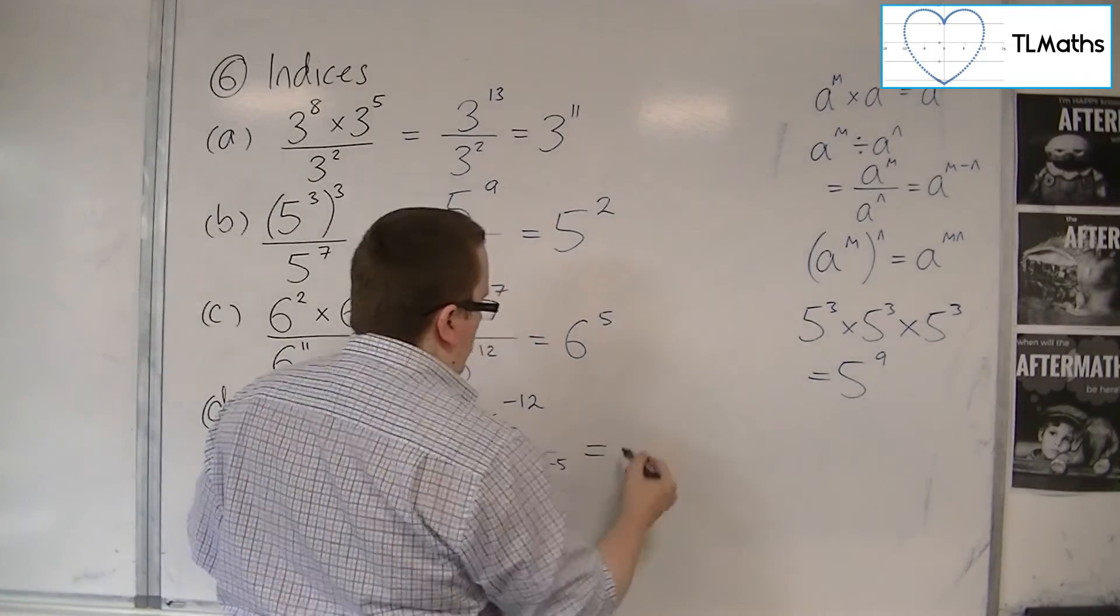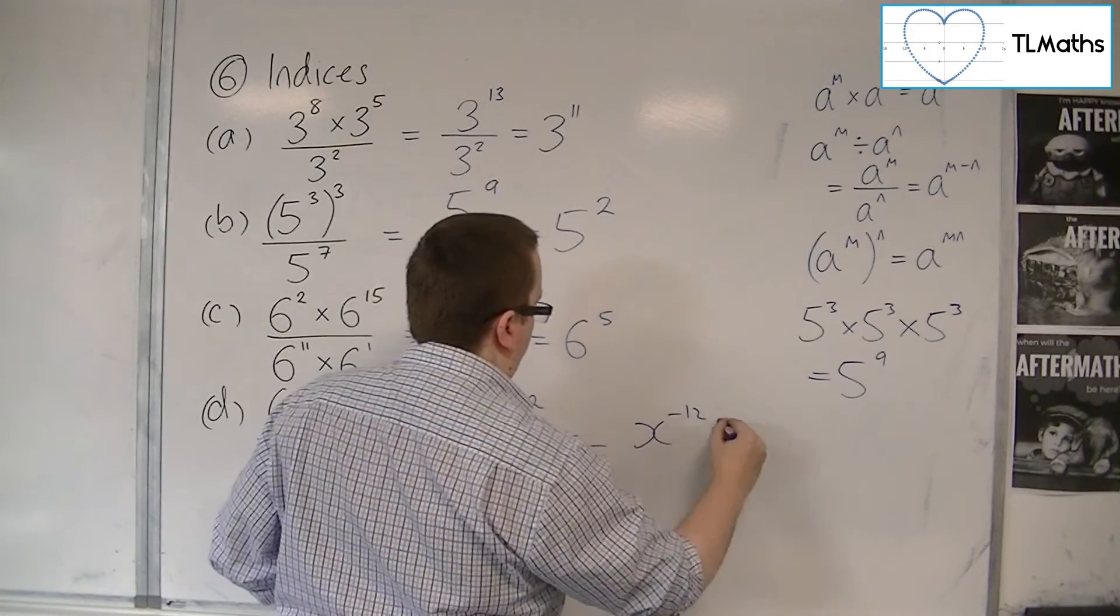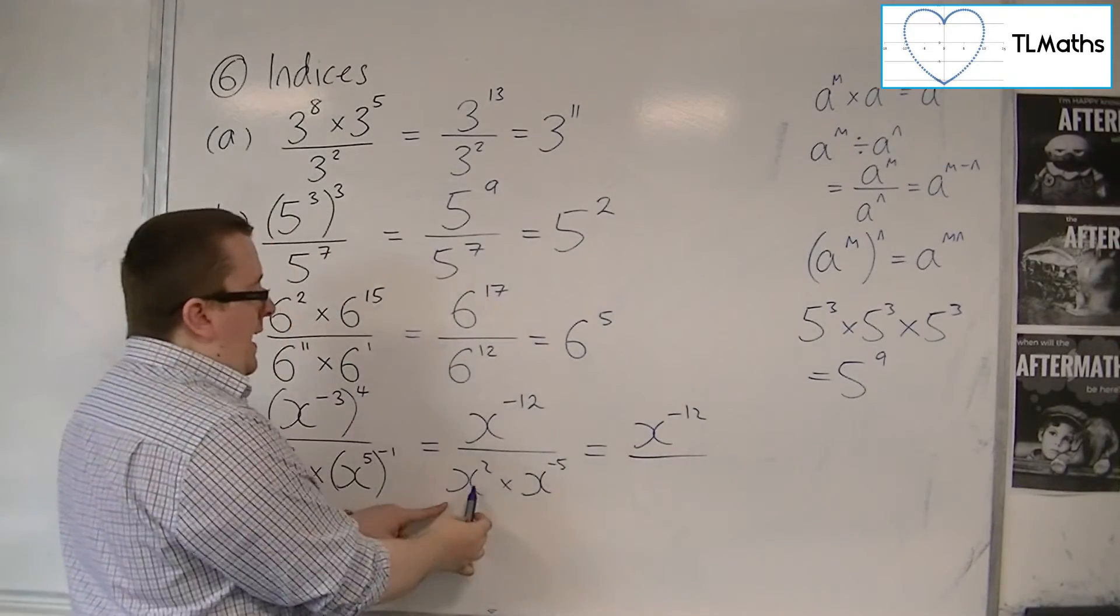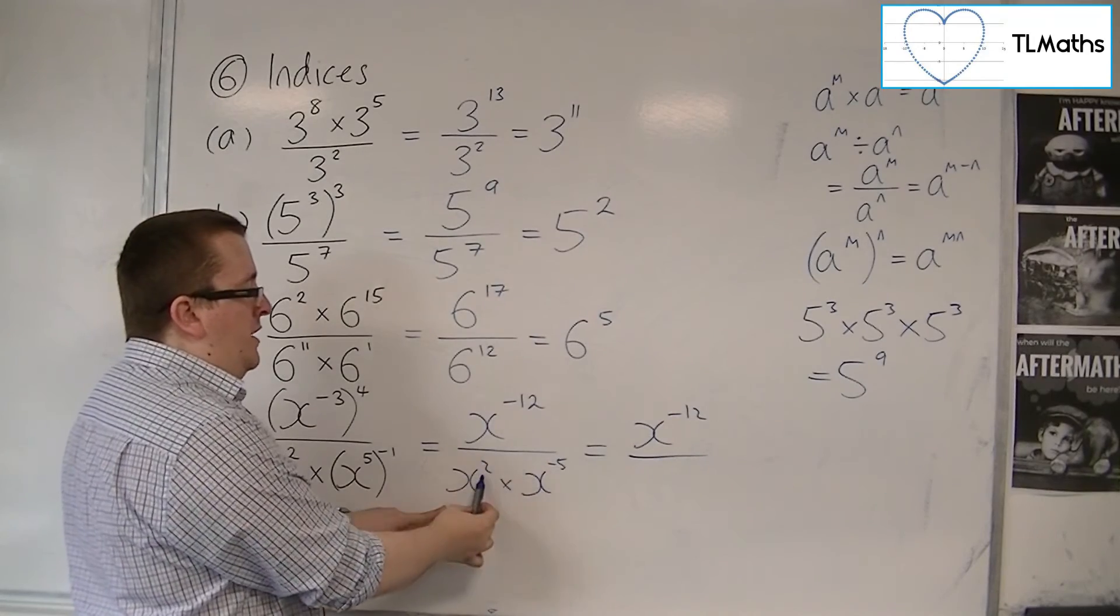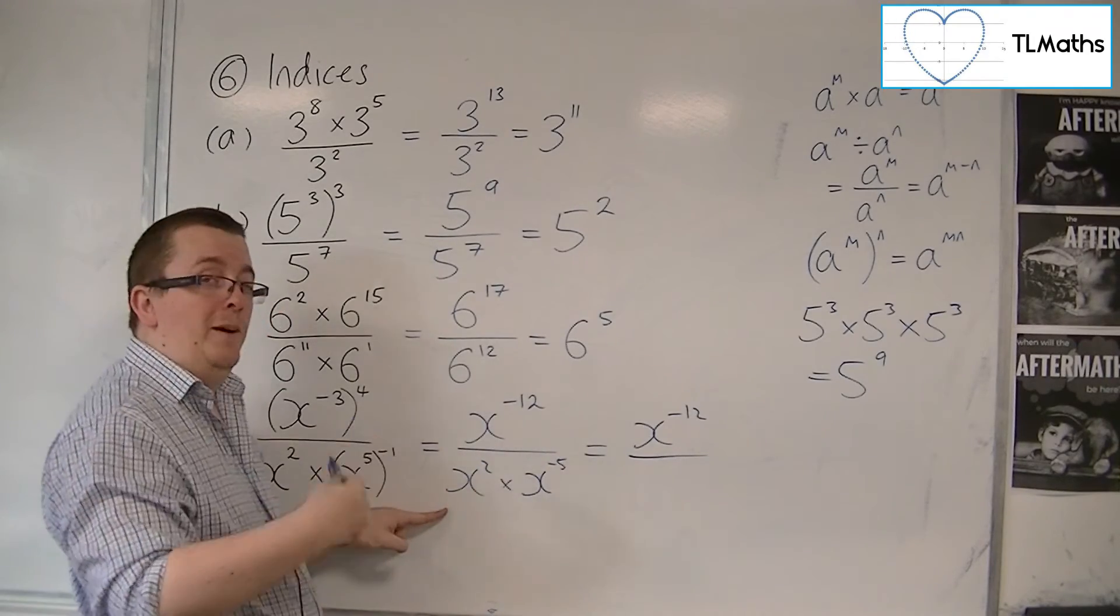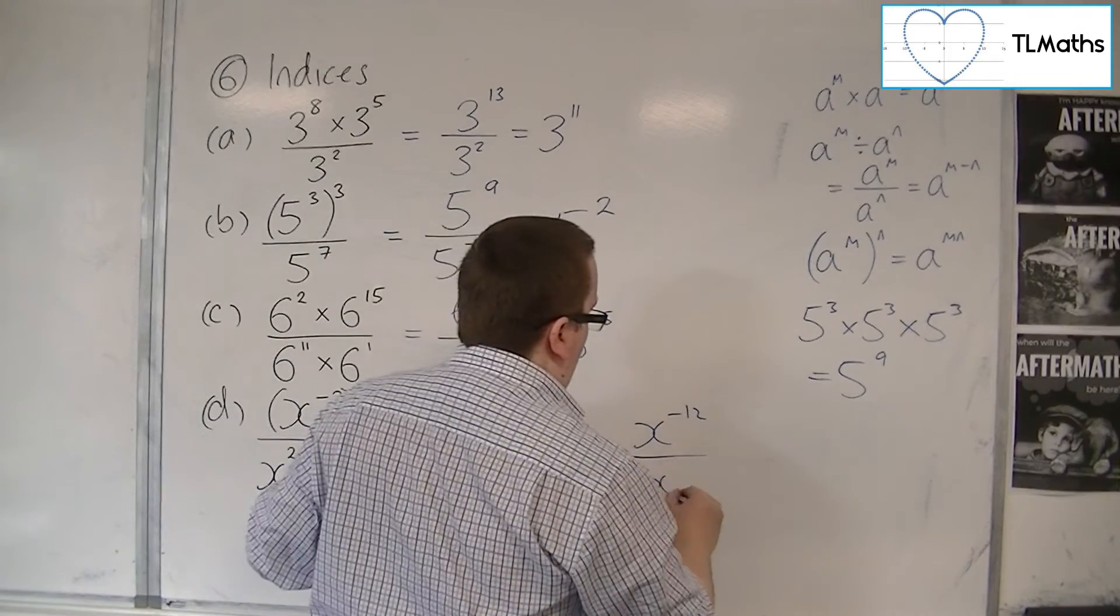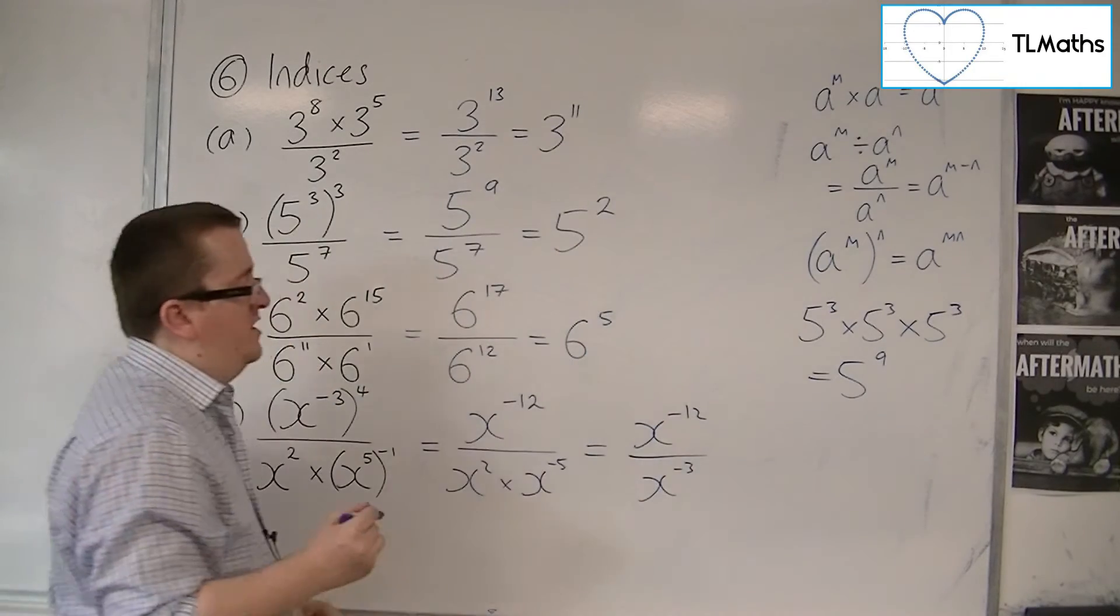Now dealing with the denominator: x^2 × x^-5. Since 2 + (-5) = -3, we have x^-3 in the denominator.